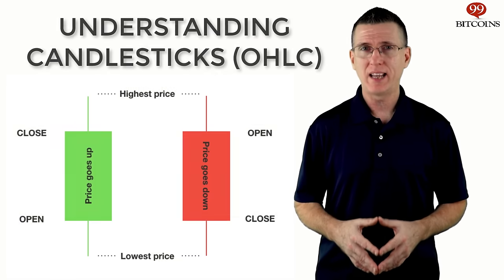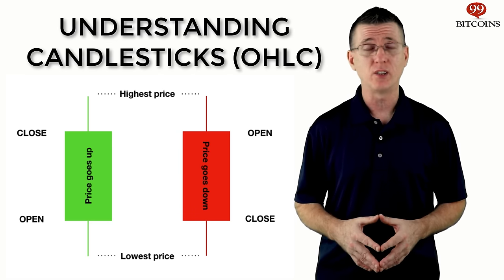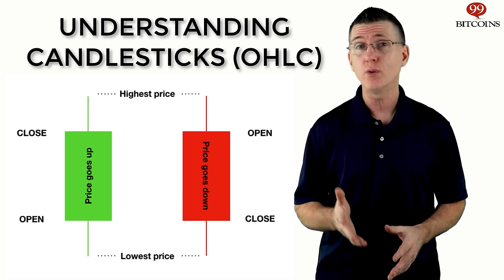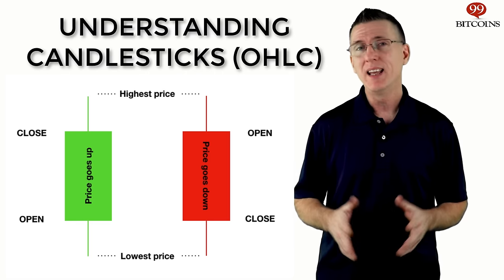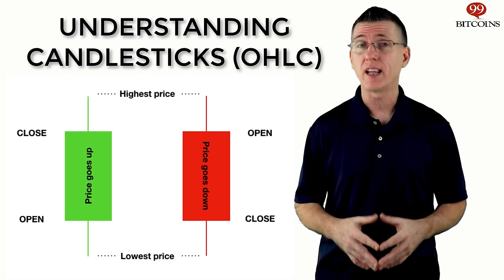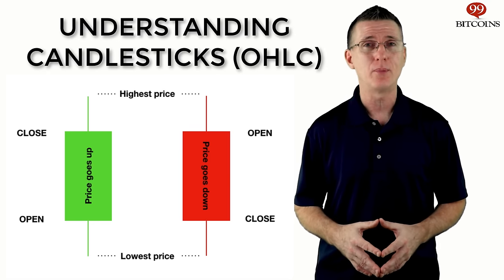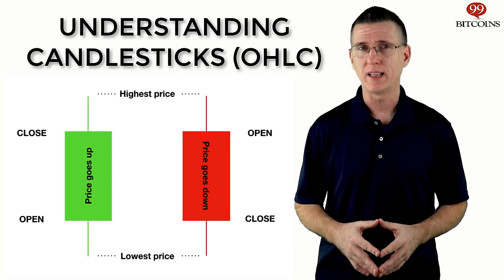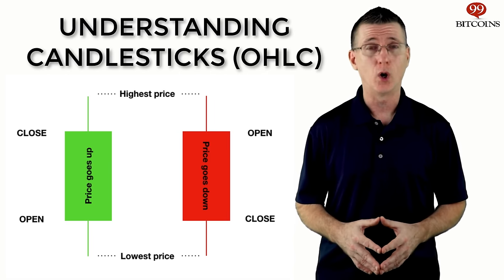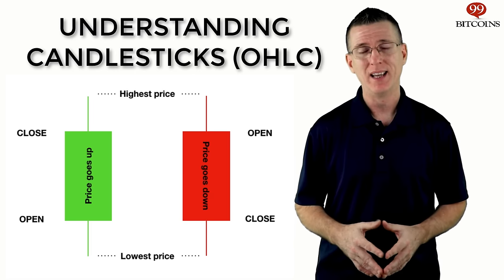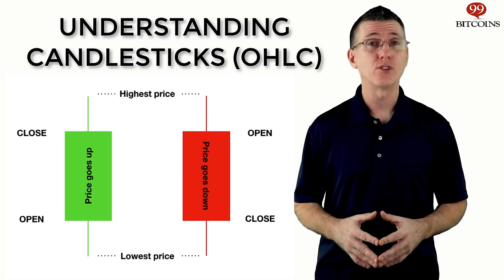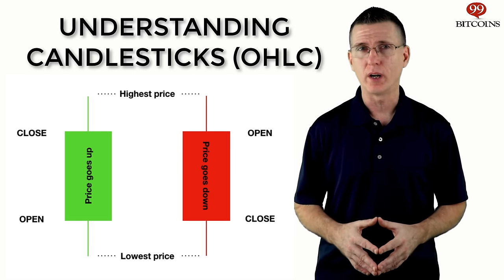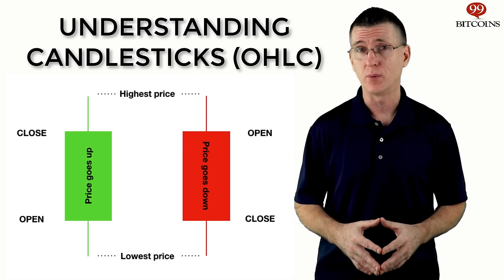Now that you're familiar with the main Bitcoin exchange terms, let me give you a short intro into reading price graphs. These are Japanese candlesticks, based on an ancient Japanese method of technical analysis used in trading rice in the 1600s. Each candle shows the opening, lowest, highest, and closing prices of the given time period. That's why you'll sometimes see people refer to candles as OHLC — open, high, low, and close. Depending on whether the candle is green or red, you can tell if the closing price of the timeframe was higher or lower than the opening price.